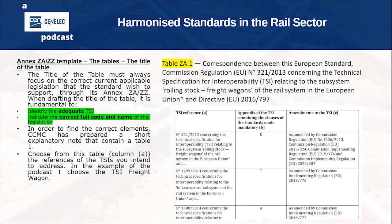To prepare this annex, you need to take elements from this little table. The title of the table must always focus on the current applicable legislation, which is why this table will be regularly updated. First, you need to identify what TSI you are addressing. In the example of this podcast, I took the freight wagon TSI. I go into the table and find the correct wording of the TSI rolling stock, which I will put at the top of the table.